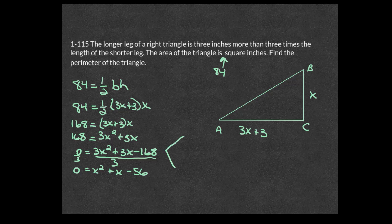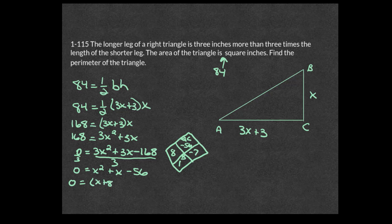Using the diamond method: find two numbers that multiply to negative 56 and add to 1. That's 8 and negative 7. Factoring gives (x plus 8)(x minus 7) equals 0. So x equals negative 8 or x equals 7. Since a length can't be negative, x equals 7. The shorter leg is 7, and the longer leg is 3(7) plus 3 equals 24.